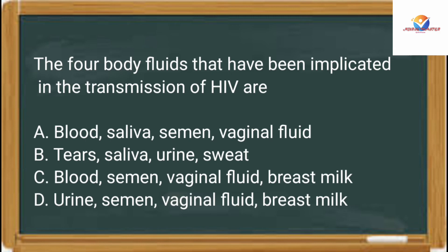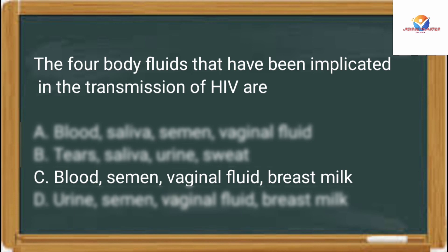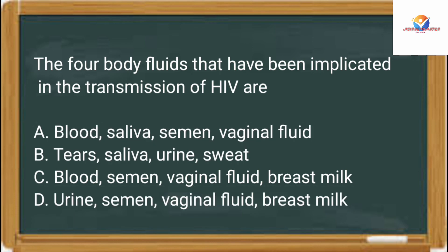The 4 body fluids implicated in the transmission of HIV are: Option A: blood, saliva, semen, vaginal fluid. Option B: tears, saliva, urine, sweat. Option C: blood, semen, vaginal fluid, and breast milk. Option D: urine, semen, vaginal fluid, and breast milk. The correct answer is option C: blood, semen, vaginal fluid, and breast milk.